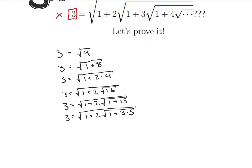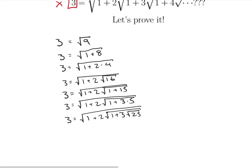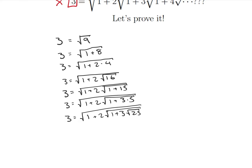This is looking suspiciously like it's going to work. So 3 equals the square root of 1 plus 2 times the square root of 1 plus 3 times the square root of 25. And we can obviously pull out that 1 — it sure looks like it's going to work. It looks like this is just going to keep going forever and equal our solution.